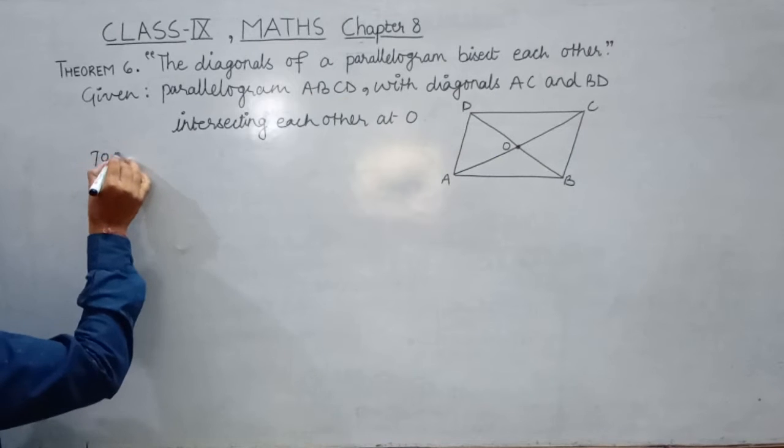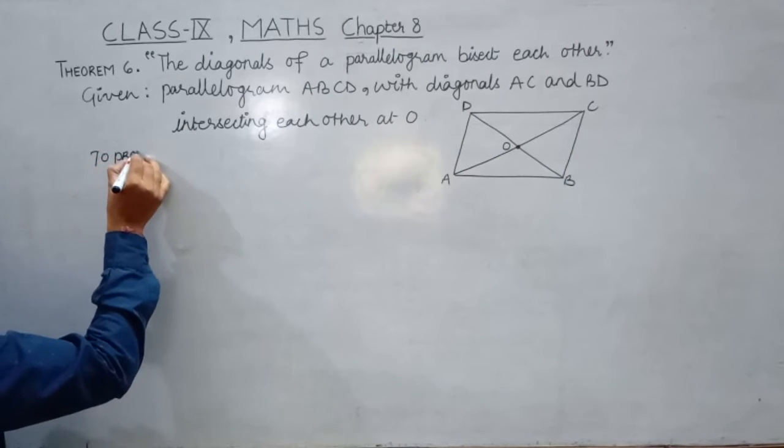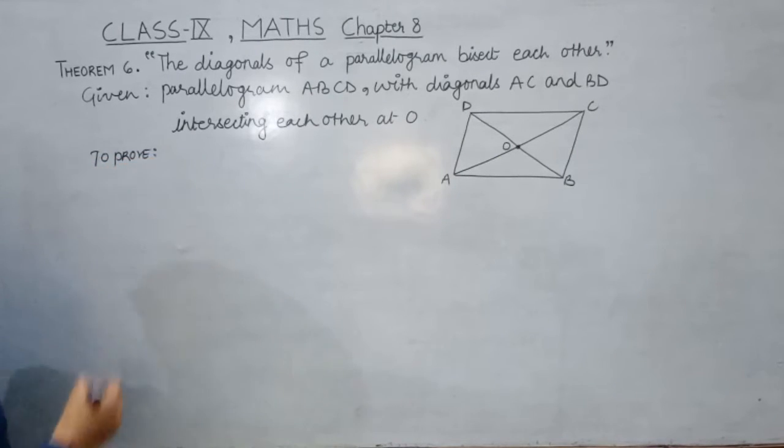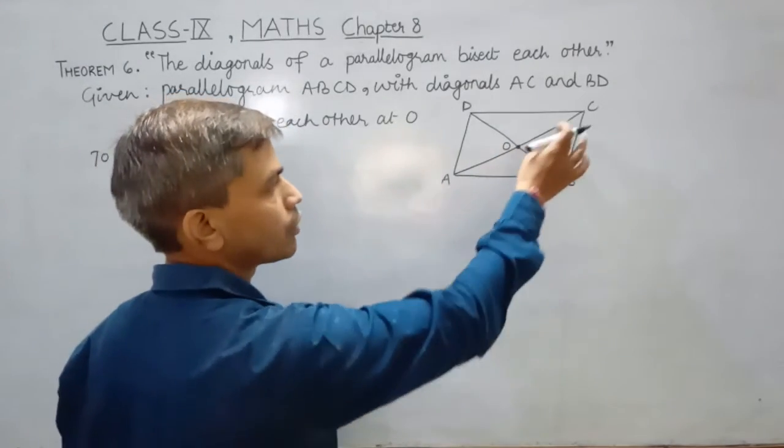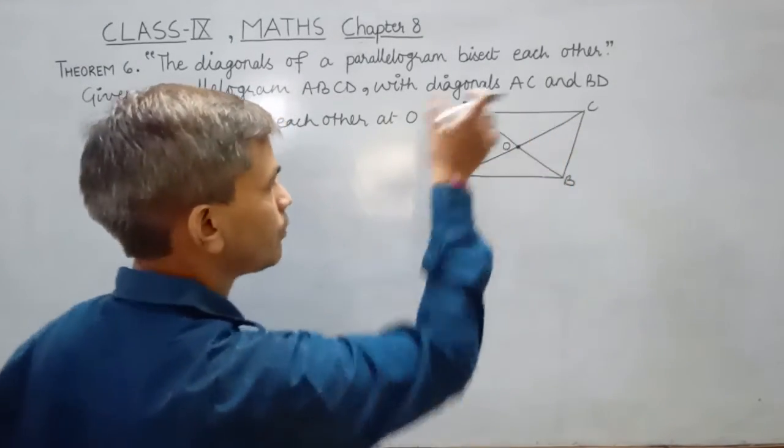For this we have to prove that its diagonals bisect each other at O. It means OA equal to OC and OB equal to OD.